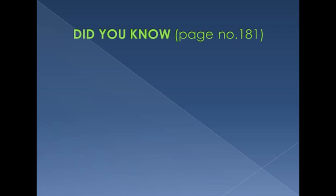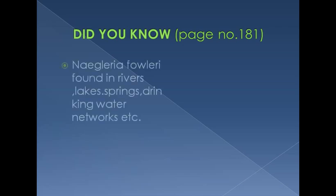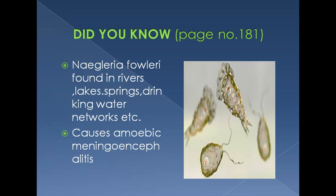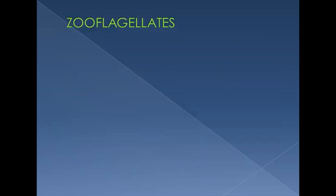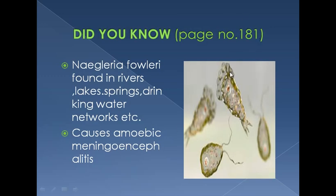On page 181, there is a caption 'Did You Know' describing an organism called Naegleria fowleri. It is found in rivers, lakes, springs, and drinking water networks. It causes amoebic meningoencephalitis and damages the brain's covering — this is why it is also known as the brain-eating amoeba.